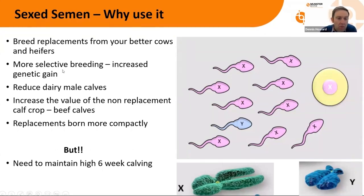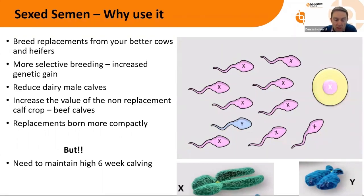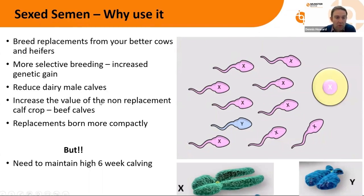Why use sex semen and what are the advantages? The big one from a dairy point of view is you can breed replacements from your better cows and heifers, be more selective about your breeding, and increase your genetic gain. With conventional semen you need four to four and a half straws to produce a heifer, whereas with sex semen, depending on the fertility of the herd, you need only two to two and a half straws. Because you're using less straws it allows you to be more selective, and 90% of calves born to sex semen being female means you reduce the dairy male calf being born on the farm. You're also able to use more beef semen from the start, increasing the value of your non-replacement beef calf crop.